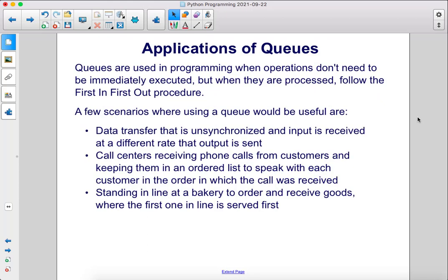Queues are used in programming when operations don't need to be immediately executed, but when they are processed, follow the first-in, first-out procedure. A few scenarios where using a queue would be useful are data transfer that is unsynchronized and input is received at a different rate than output is sent, call centers receiving phone calls from customers and keeping them in an ordered list to speak with each customer in the order in which the call was received, and standing in line at a bakery to order and receive goods, where the first one in line is served first.